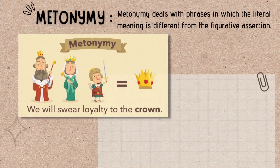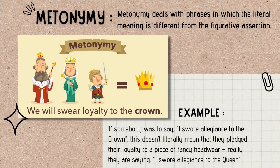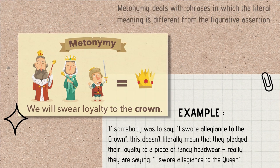At last, metonymy. Metonymy deals with phrases in which the literal meaning is different from the assertion. For example, if someone says 'I swore allegiance to the crown,' this doesn't literally mean they pledged loyalty to a piece of fancy headwear — really they are saying 'I swore allegiance to the queen.'